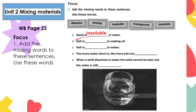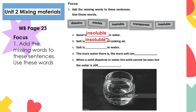Letter B: salt is blank in cooking oil. The answer is insoluble. Salt doesn't dissolve in oil at all because oil has practically no charge. Salt and oil are not chemically alike — one is charged, the other is not. As a result, when salt is added to oil, no bonds are broken. So B is insoluble.